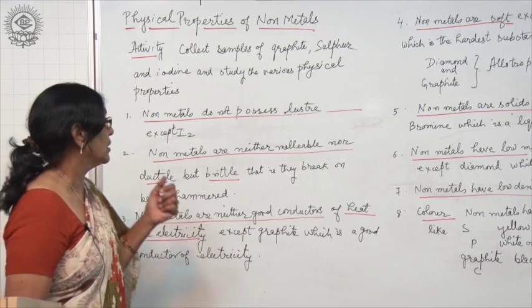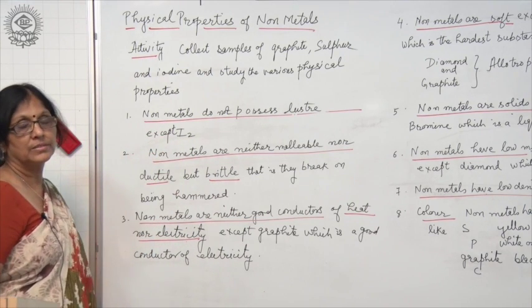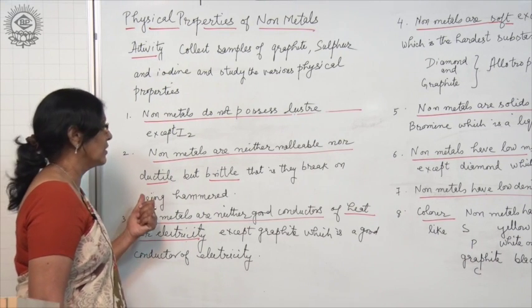Non-metals do not possess luster, do not have a shining surface except iodine, which has a lustrous surface, which has a shining surface.